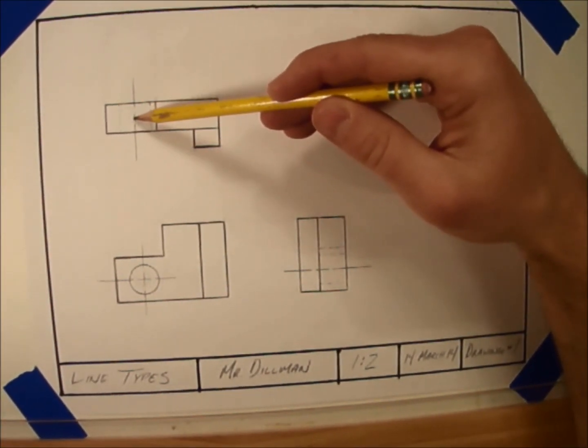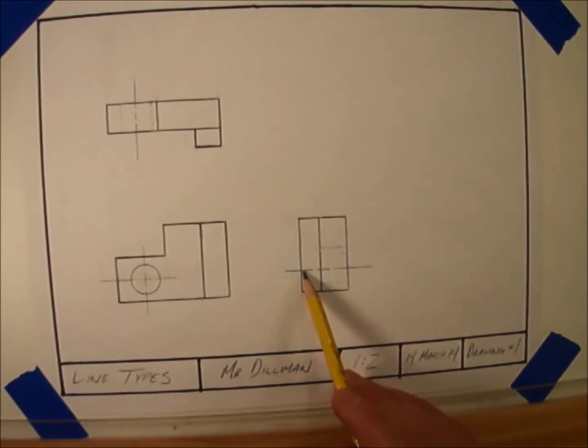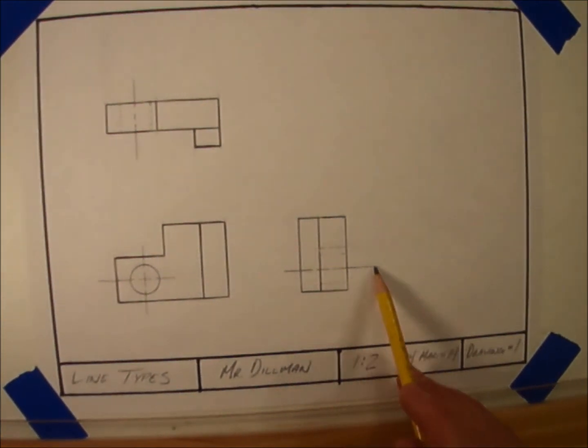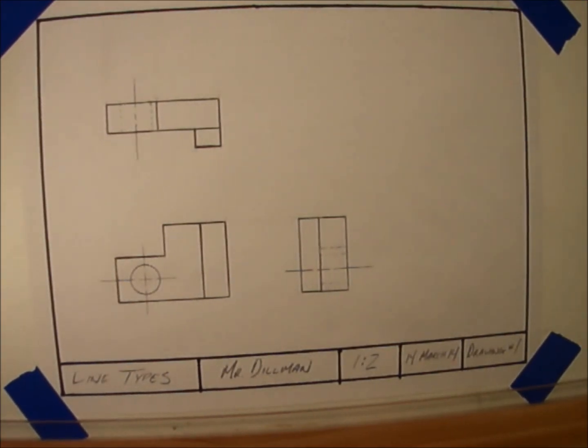When we're looking at a hole straight on, we see two of these lines crossing like this. And when we view the hole from the side, a single center line runs down the center of the hole, letting us know that this is a hole and not a notch or a rectangle or something.